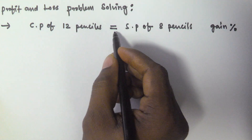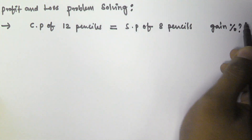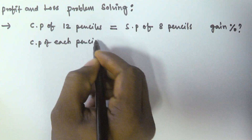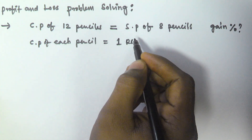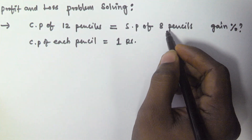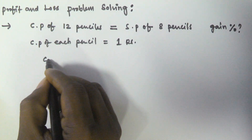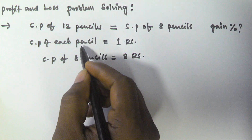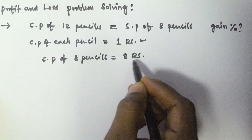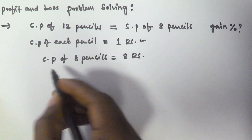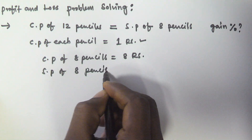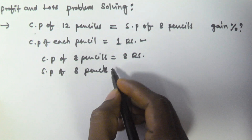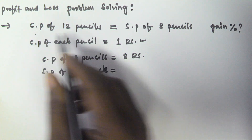So the cost price of 12 pencils is equal to the selling price of 8 pencils, and we have to find the gain percentage. Let us assume the cost price of each pencil is equal to 1 rupee. So the cost price of 8 pencils is 8 rupees. And according to the given question, the selling price of 8 pencils is equivalent to the cost price of 12 pencils, which is 12 rupees.